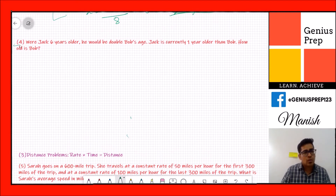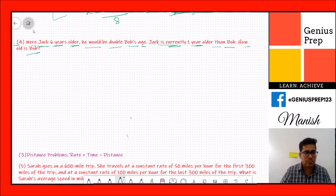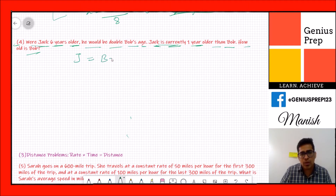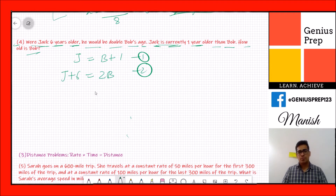The fourth question says: if Jack were six years older, he would be double Bob's age. Jack is currently one year older than Bob. How old is Bob? We have two equations and two variables. First equation: j = b + 1. Second equation: j + 6 = 2b.